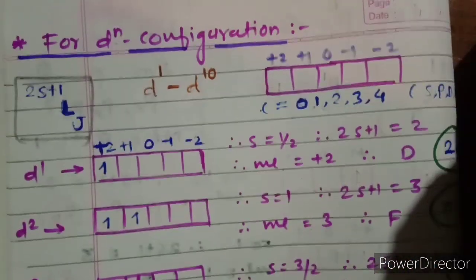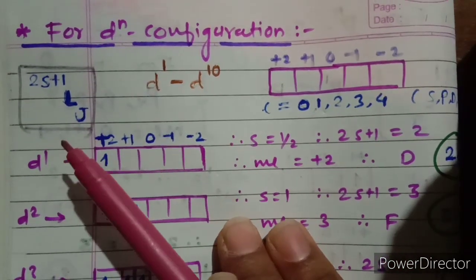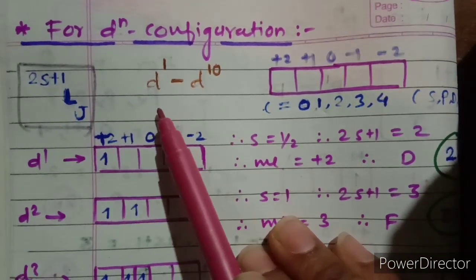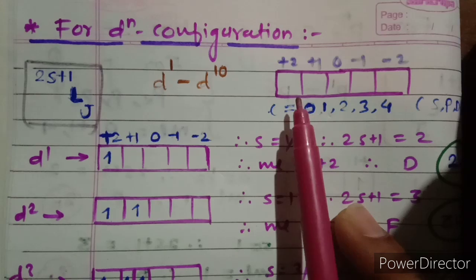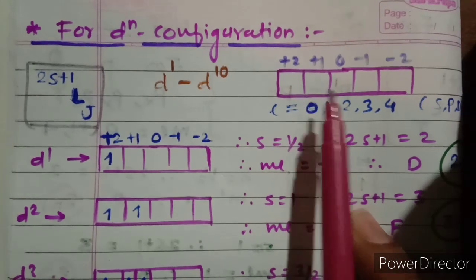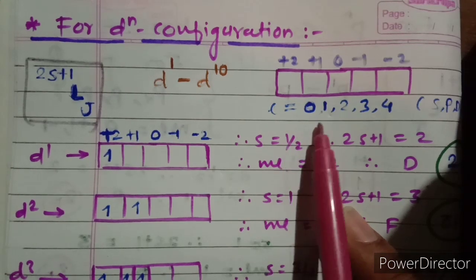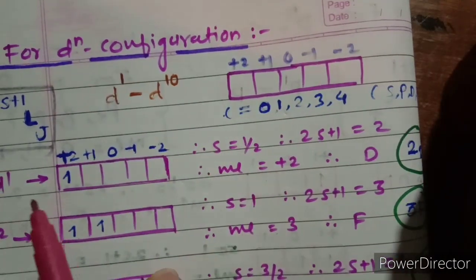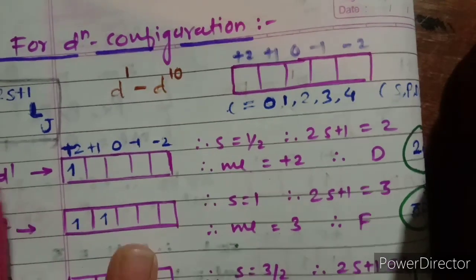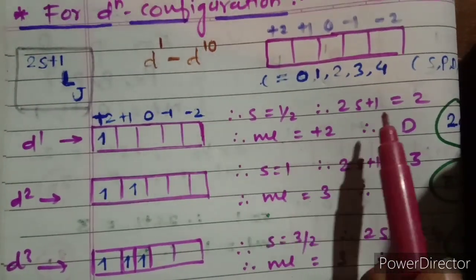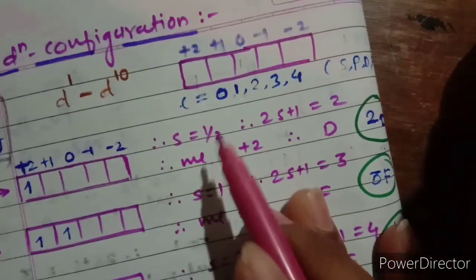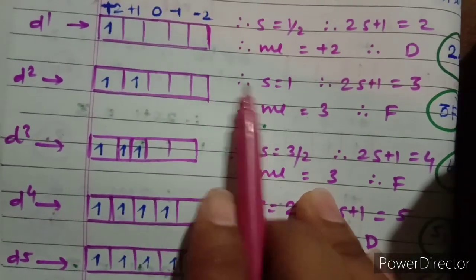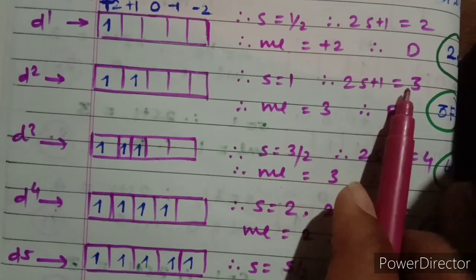Now let's move to the dn configuration. Using the same formula (2S+1)LJ, there are 10 electrons from d1 to d10 arranged across five orbitals, with ml values +2, +1, 0, −1, −2 and L values 0,1,2,3,4 corresponding to s, p, d, f. For d1, the electron is in ml = +2, so S = ½, 2S+1 = 2, ml = 2 gives term D. The term symbol is ²D.